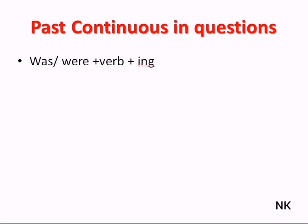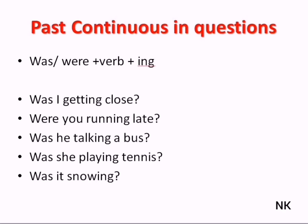Let's have a look at the past continuous in questions. Again, we use the past simple form of the verb 'to be'—'was' or 'were'—plus the base form of the verb and '-ing'. Was I getting close? Were you running late? Was he talking too fast? Was she playing tennis? Was it snowing?